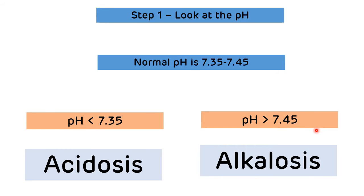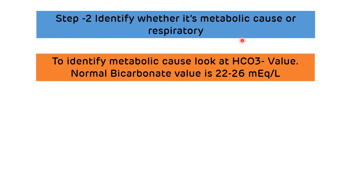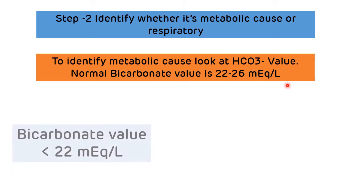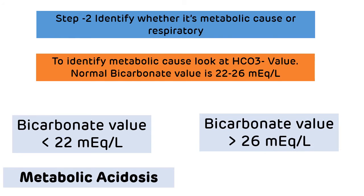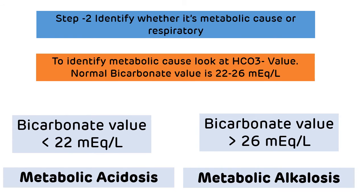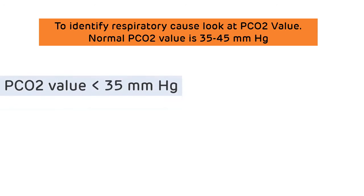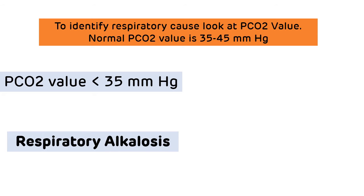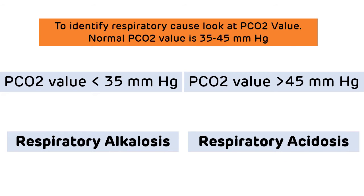Step two: identify whether the cause is metabolic or respiratory. For metabolic cause, look at the bicarbonate value — normal is 22–26 mEq/L. If bicarbonate is less than 22 mEq/L, it is metabolic acidosis; if greater than 26 mEq/L, it is metabolic alkalosis. For respiratory cause, look at PCO2 — normal is 35–45 mmHg. If PCO2 is less than 35 mmHg, it indicates a respiratory disorder.